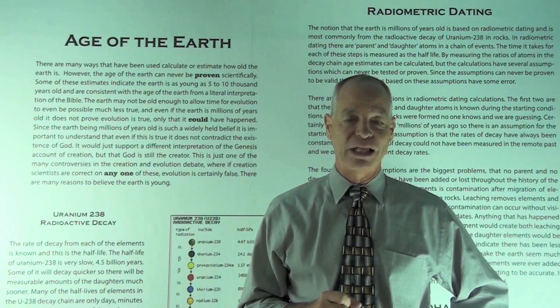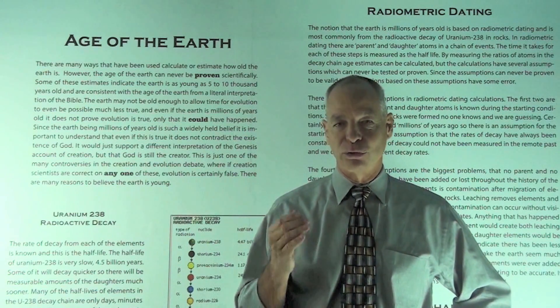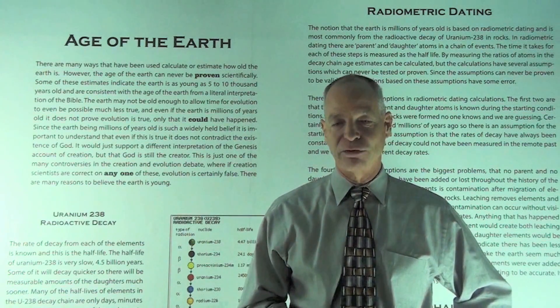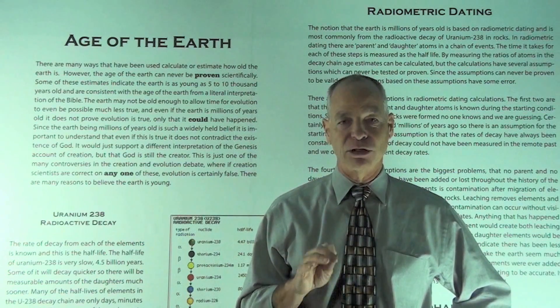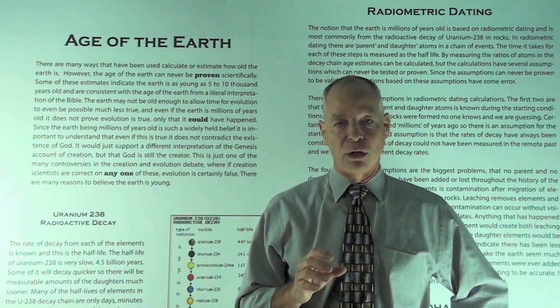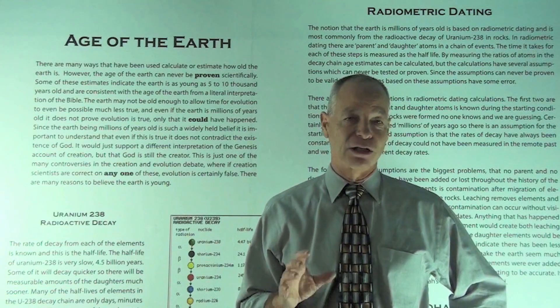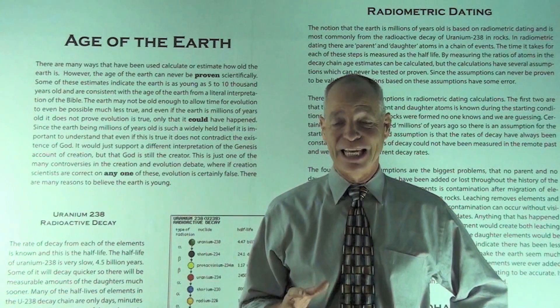another one is the polonium-218 halos, which is a complex topic, but there's things that exist through the radiometric decay that has a half-life of three minutes, and they're found in the pre-Cambrian granites on every continent of the globe. So because it only existed for three minutes and we see it everywhere, it's evidence that the Earth was created instantaneously.